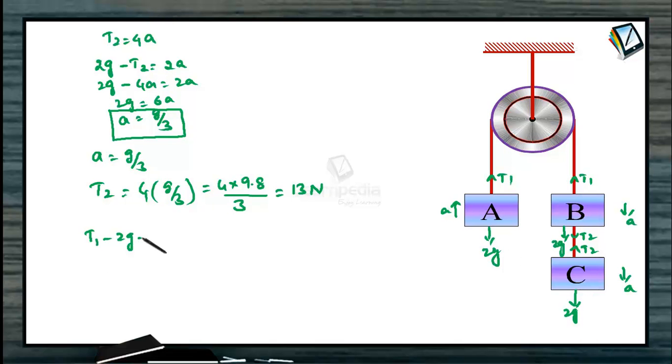We can also calculate the value of T1. T1 minus 2g is equal to 2A. So, T1 will be equal to 2 into A is g by 3 plus 2g. So, this will be 8g by 3. We can substitute and get the value.